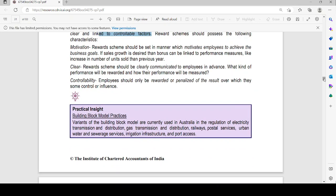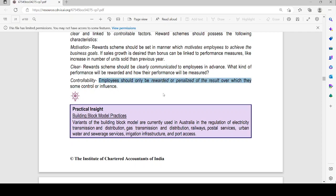Motivation. Rewards scheme should be set in a manner which motivates the employee to achieve business rules. Clear. Rewards scheme should be clearly communicated to employee in advance. Controllability. Employees should be rewarded or penalized of the result over which they have control or influence.